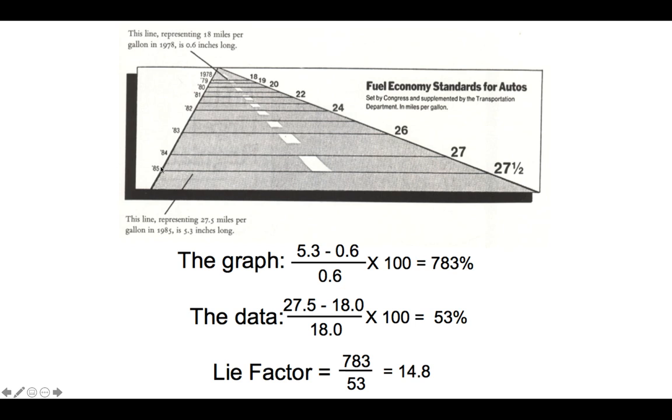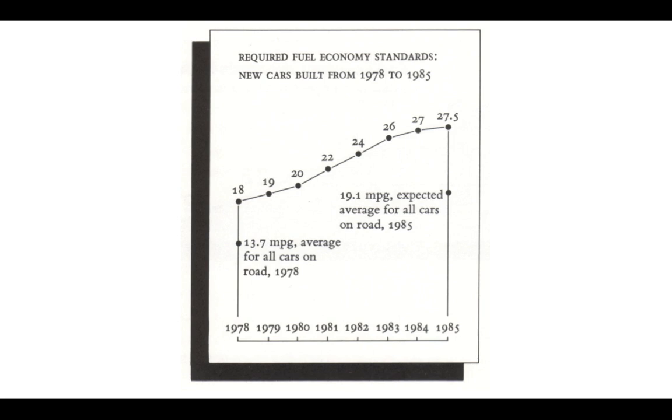We take the length of the effect on the graph. The effect on the graph is the length of the second line minus the length of the first line over the original value times 100. That's 783%. We do the same thing for what the data is. It's 27.5 minus 18 over 18 times 100. That's 53%. We take that ratio. We see that this lie factor is 14.8. It means that the graphic is showing an effect that is 14.8 times more than the data effect that we have.